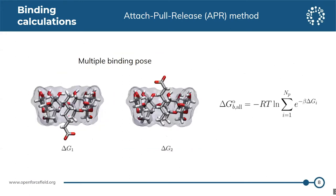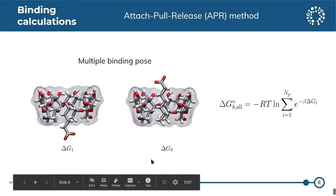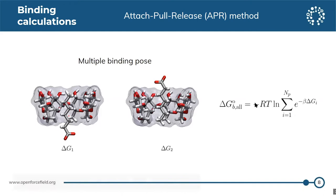Because of the asymmetry of the cyclodextrin host, there are two possible binding poses. We need to perform the APR calculation twice, once for each binding pose. To get the final free energy, we add the Boltzmann probability of the two binding free energies and convert it back into energy space to get the final binding free energy. As you can see, there are a lot of steps involved to perform a single APR calculation.